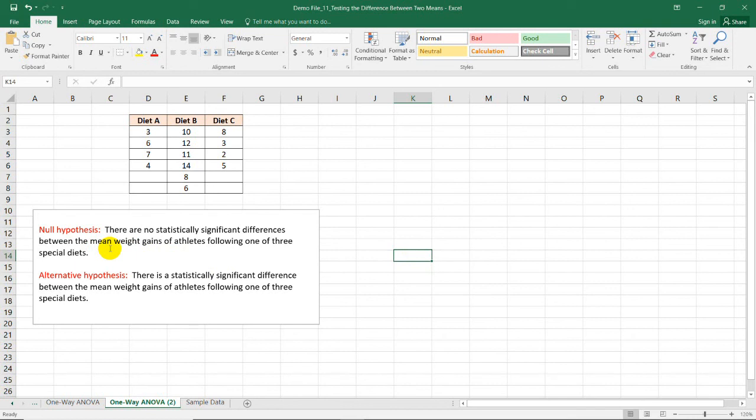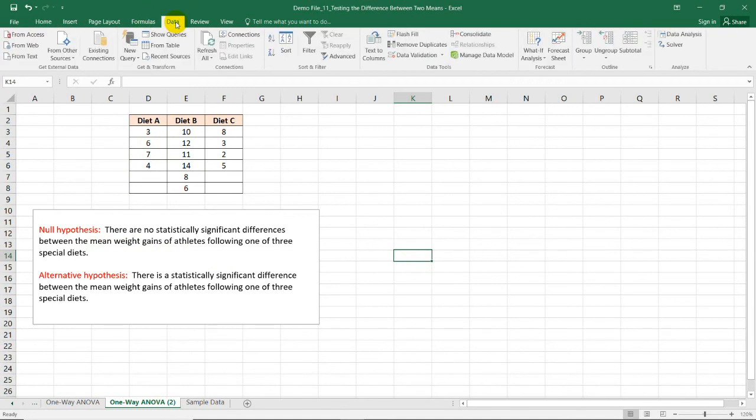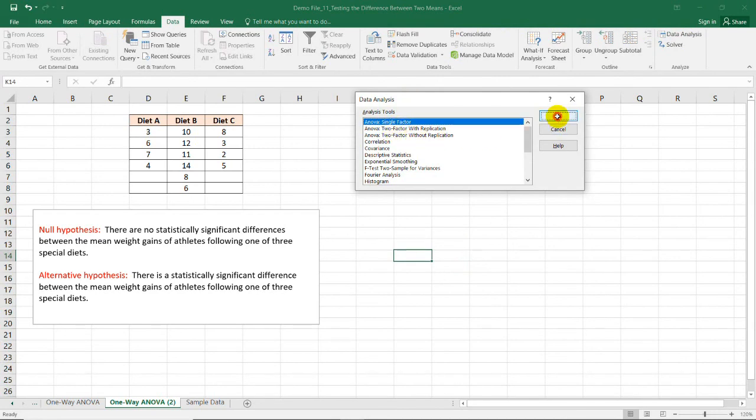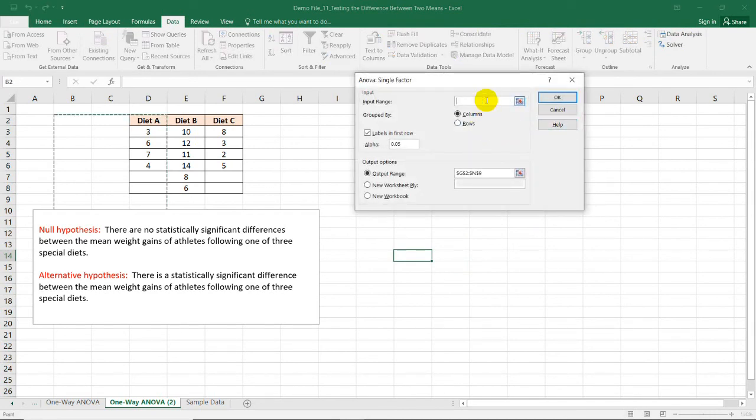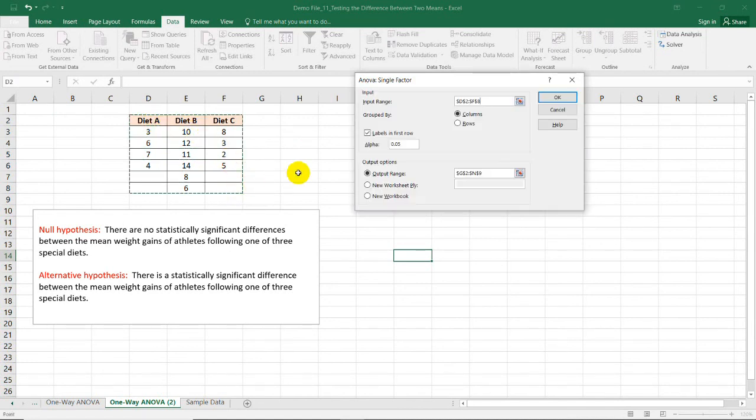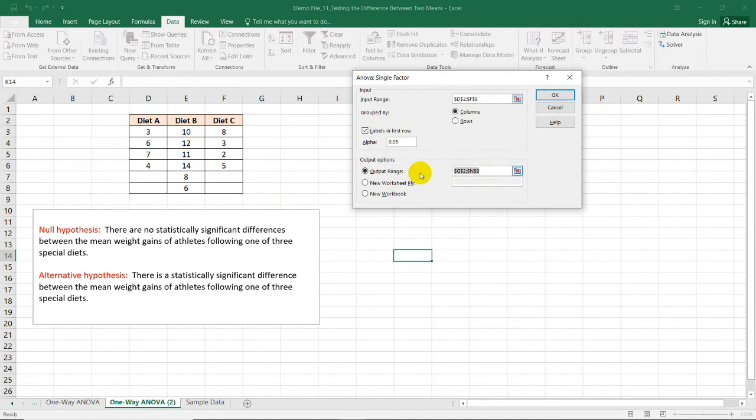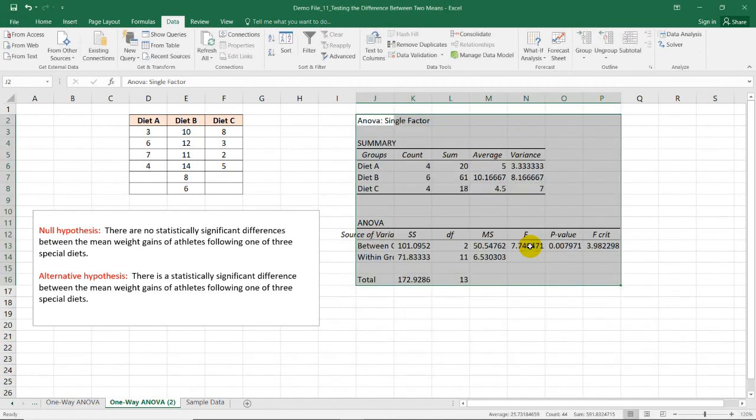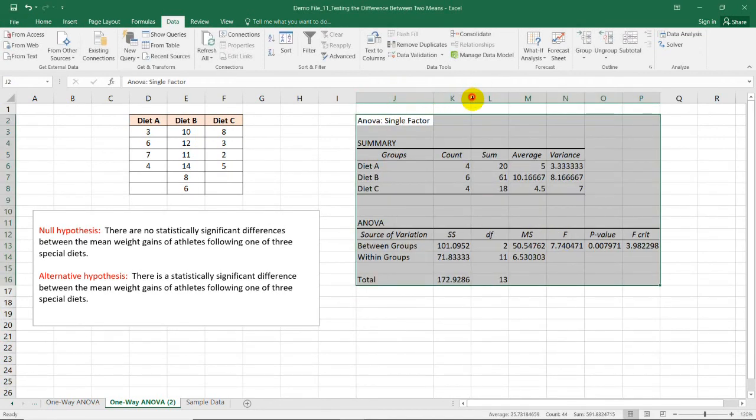By going back to data ribbon, data analysis, and choosing ANOVA single factor, we need to change our input range. And this time, I'm going to select diets A to C. Then, columns was selected, labels in first row, and we have the same level of significance which is 0.05. For the output range, I would like to change my output range somewhere here. Press OK. And we have the summary table for our ANOVA.